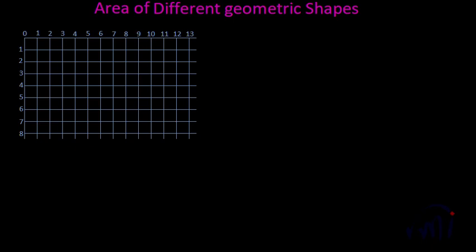I have already drawn a grid — a grid of unit squares where each tiny square is of length one unit and breadth one unit. This grid will guide us to find the length and breadth of the geometric shapes and help us find their area. Area of any geometric shape is in square units — a square of unit length and unit breadth. So if we count how many such squares are inside any geometric shape, we can find its area.